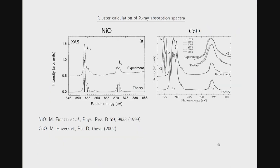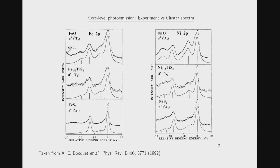You can also calculate X-ray absorption spectra within this formalism. For cobalt oxide, there is really peak-to-peak correspondence between theory and experiment. Even the tiny temperature dependence seen in experiment is reproduced by the cluster calculation. Finally, you can also calculate core-level photoemission spectra for iron and nickel compounds, and just at first glance you can see excellent agreement.